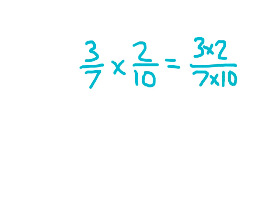What is 3 times 2? Right, 6. And what is 7 times 10? 70.